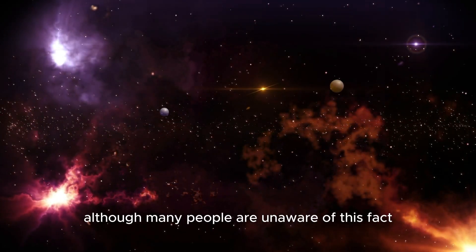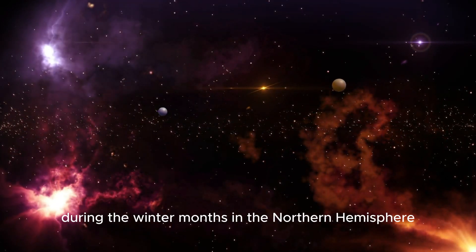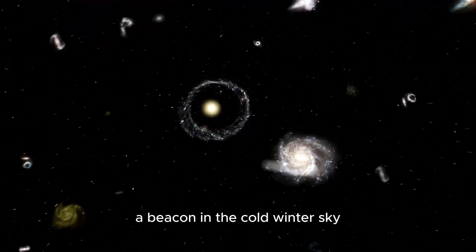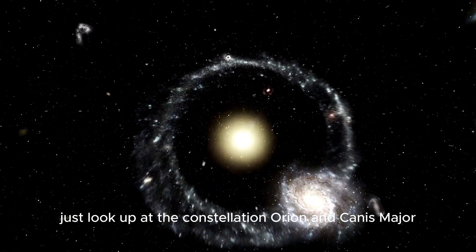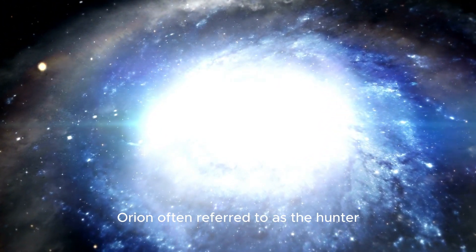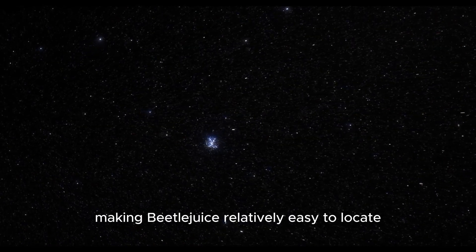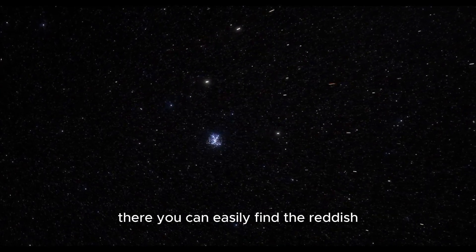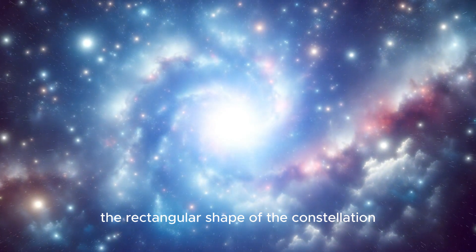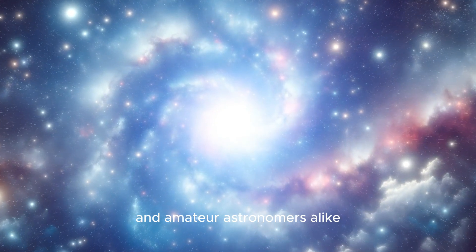Although many people are unaware of this fact, it is possible to spot Betelgeuse in the night sky during the winter months in the Northern Hemisphere. This bright, ruddy star stands out even to the naked eye, a beacon in the cold winter sky. Just look up at the constellation Orion to see this dazzling star in all its splendor. Orion, often referred to as the Hunter, is one of the most recognizable constellations, making Betelgeuse relatively easy to locate. You can easily find the reddish-orange star that marks the upper left corner of the constellation. This distinctive color and position make it an intriguing object for stargazers and amateur astronomers alike.